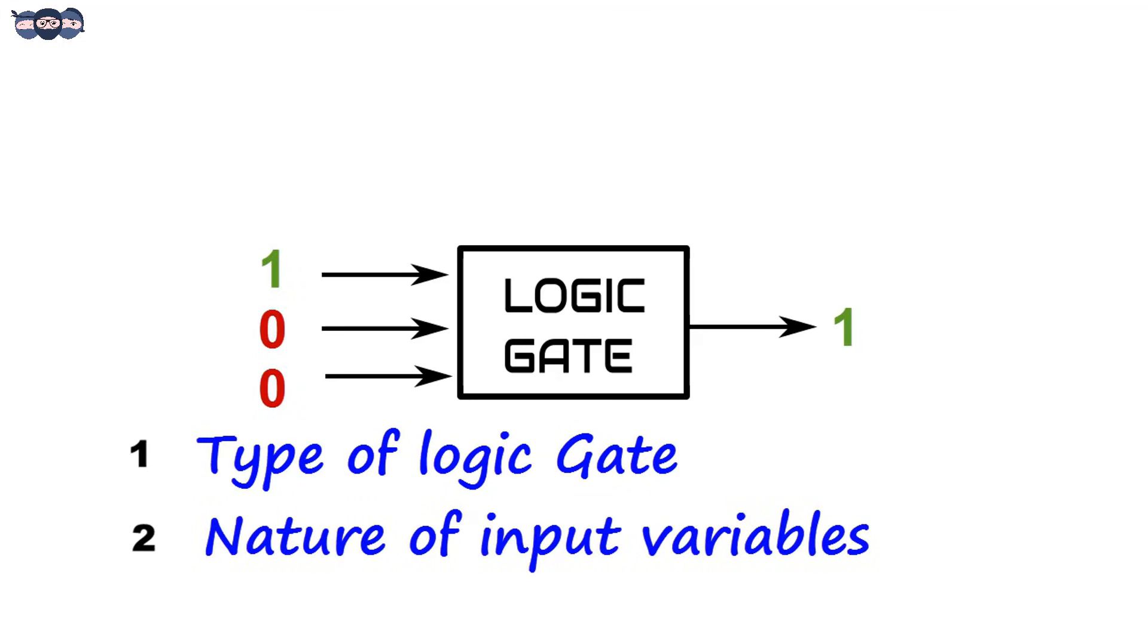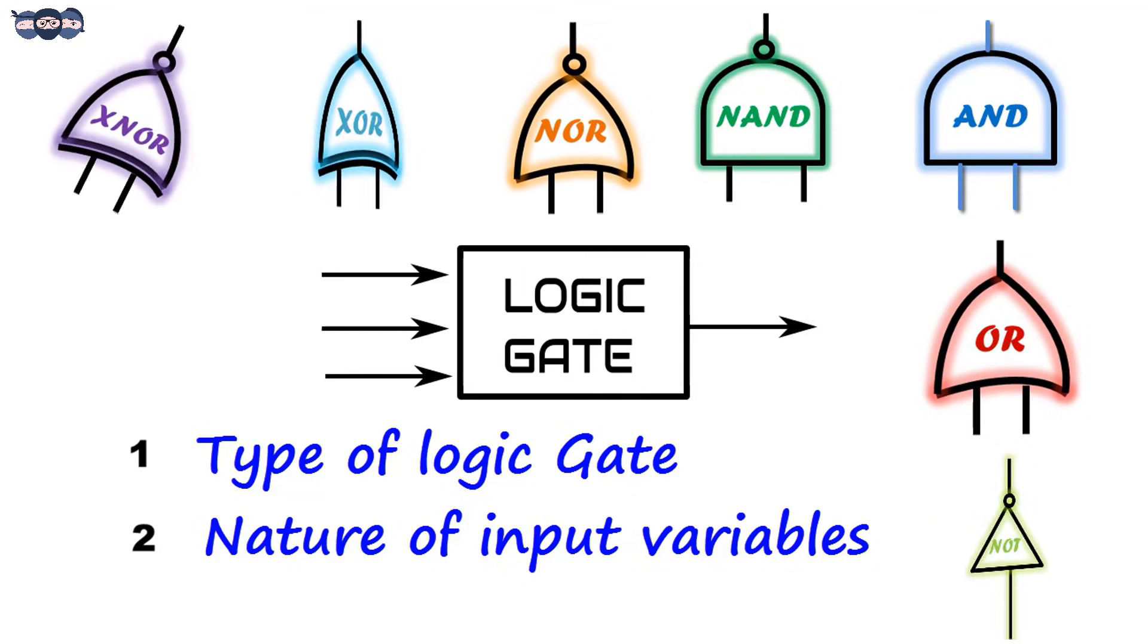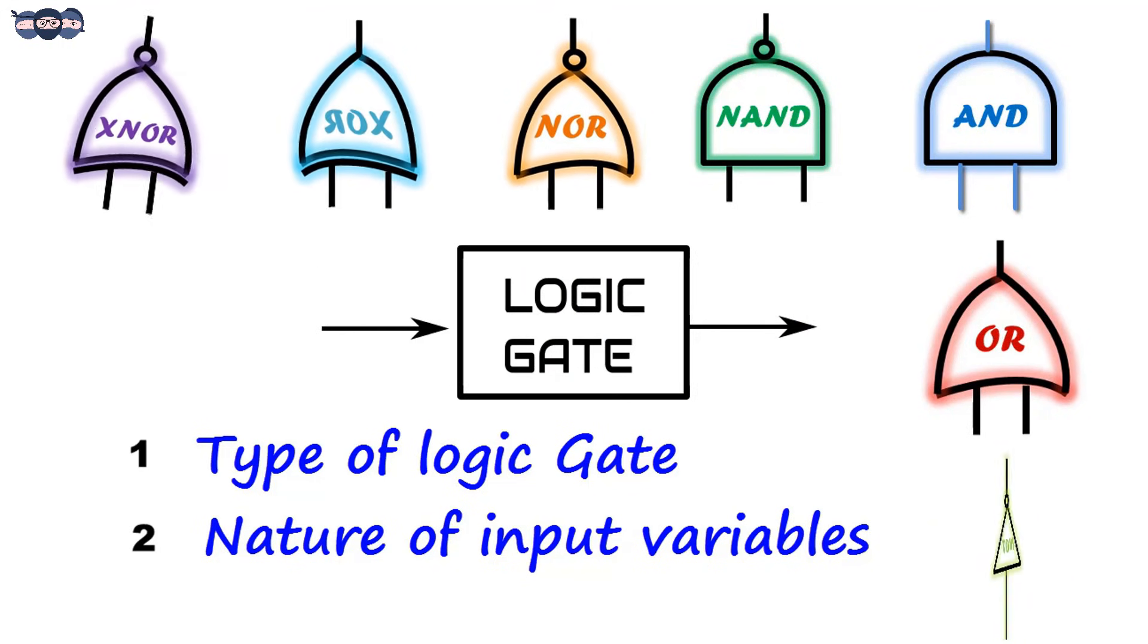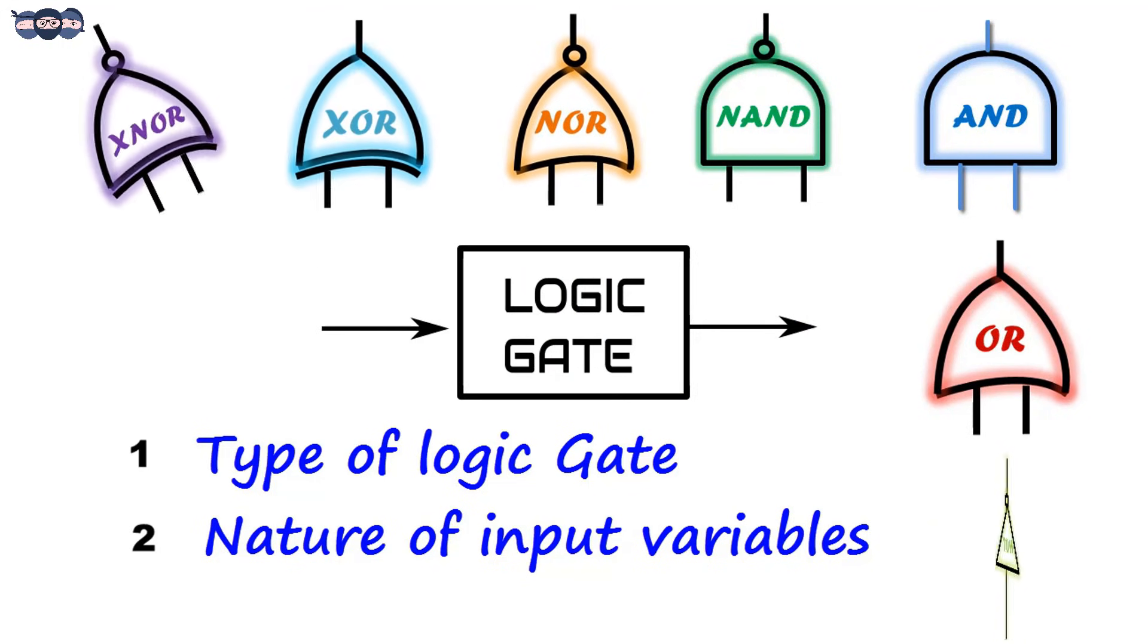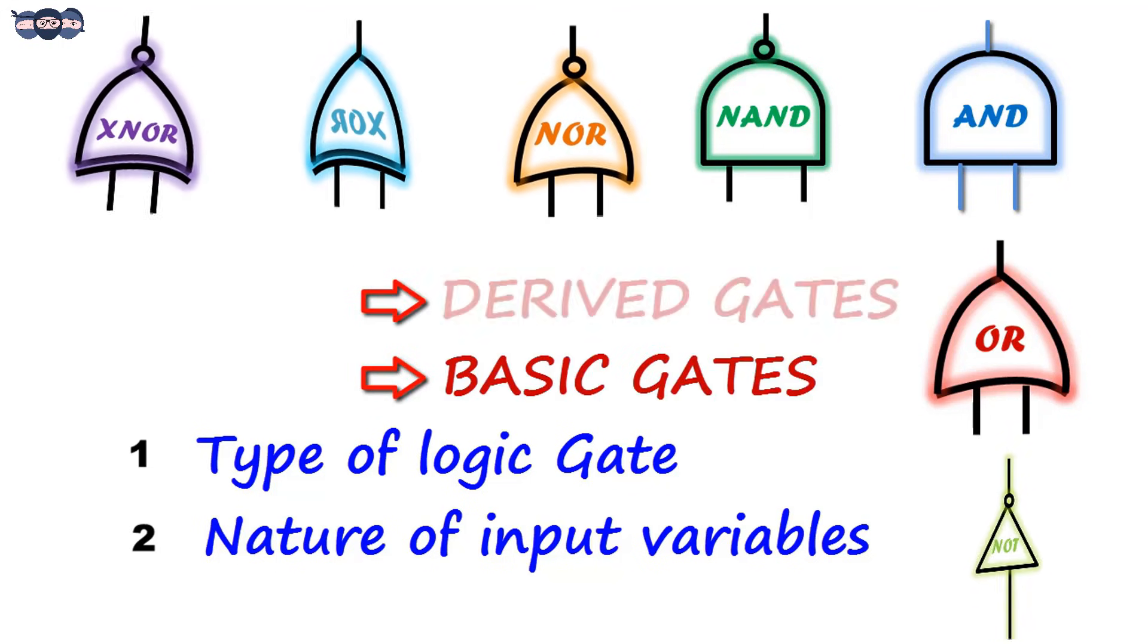There are numerous gates available, each for a specific decision. Each of these have a specific symbol and clearly defined behavior. There are two major classifications: basic gates and derived gates.